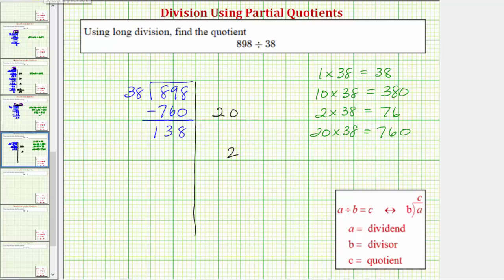And we multiply by the divisor. 2 times 38 equals 76. And we subtract. 8 minus 6 is 2. 13 minus 7 is 6.